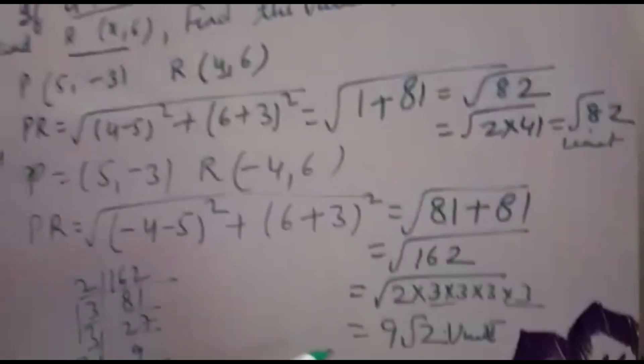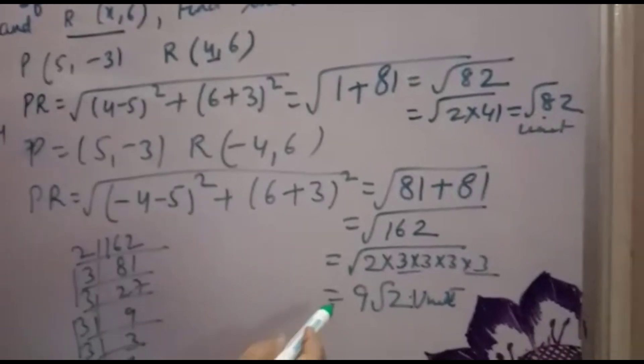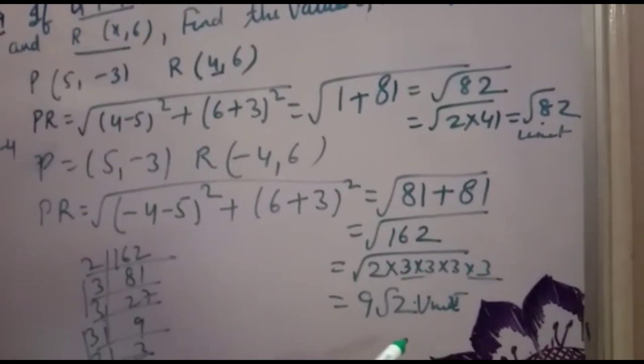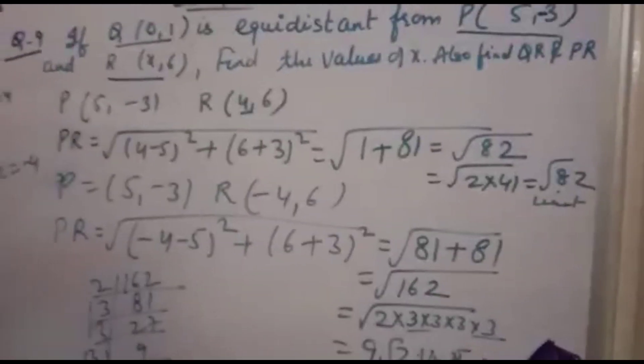So PR came out to √82 and 9√2, and QR was already calculated as √41. Thank you.